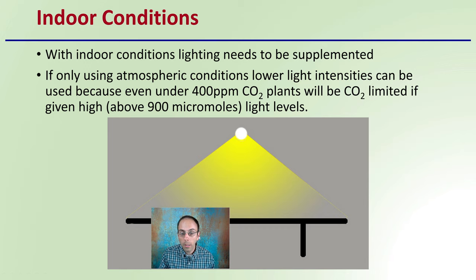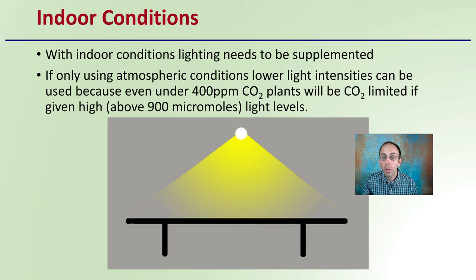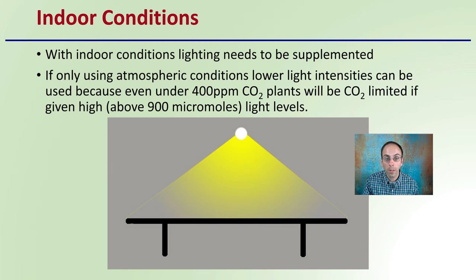For indoor conditions, keep in mind that lighting needs to be supplemented as well. If only using atmospheric conditions, lower light intensities can potentially be used, because even under 400 parts per million of carbon dioxide, plants will be carbon dioxide limited if given higher light — which is considered above 900 micromoles of light. So if you're seeing high-intensity lights for sale, they may recommend supplemental carbon dioxide, because plants at atmospheric levels cannot really use much above 900 micromoles.